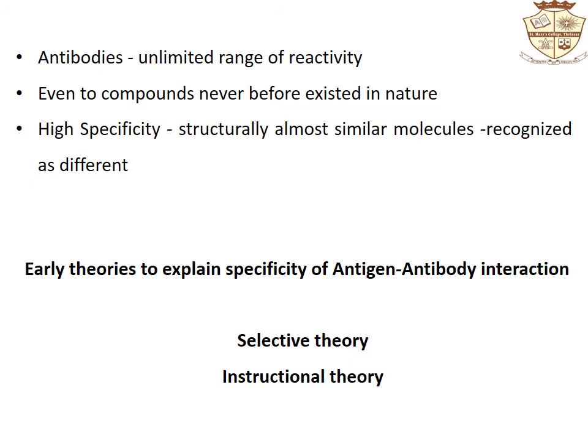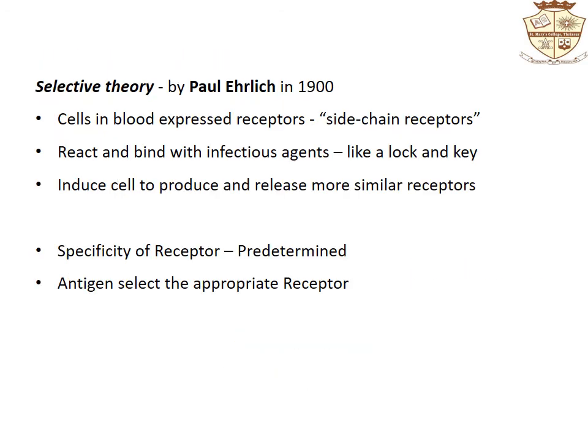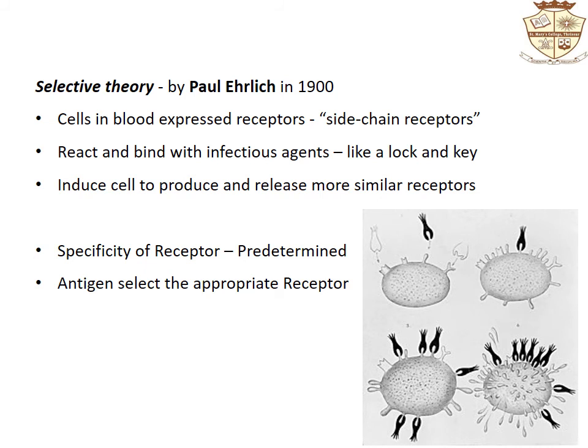These studies demonstrated that antibodies have an almost unlimited range of reactivity, even to compounds never before existing in nature that are synthesized in a laboratory, and that highly structurally similar molecules could be recognized as different by antibodies. The selective theory and the instructional theory were proposed to explain these phenomena. Selective theory was detailed by Paul Ehrlich in 1900, who proposed that cells in the blood expressed a variety of receptors, which he called sidechain receptors. These could react and bind with infectious agents in a lock-and-key manner, and this interaction induced the cell to produce and release more receptors with the same specificity. As per this theory, the specificity of the receptor was determined before its exposure to antigen, and the antigen just selected the appropriate receptor.